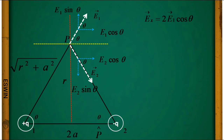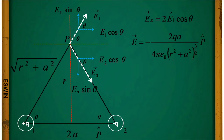We get E-bar = −2qa / [4πε₀ (r² + a²)^(3/2)] · p-cap. The negative sign indicates the electric field points opposite to the direction of the dipole — the dipole points to the left and the electric field points to the right.